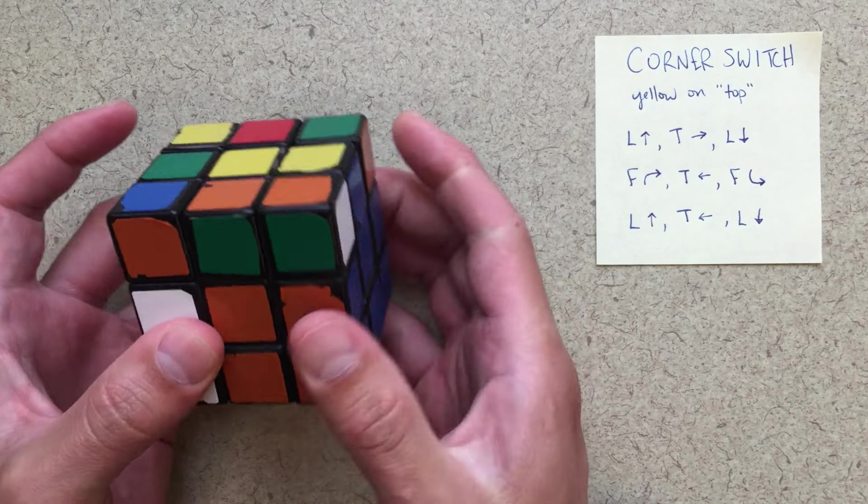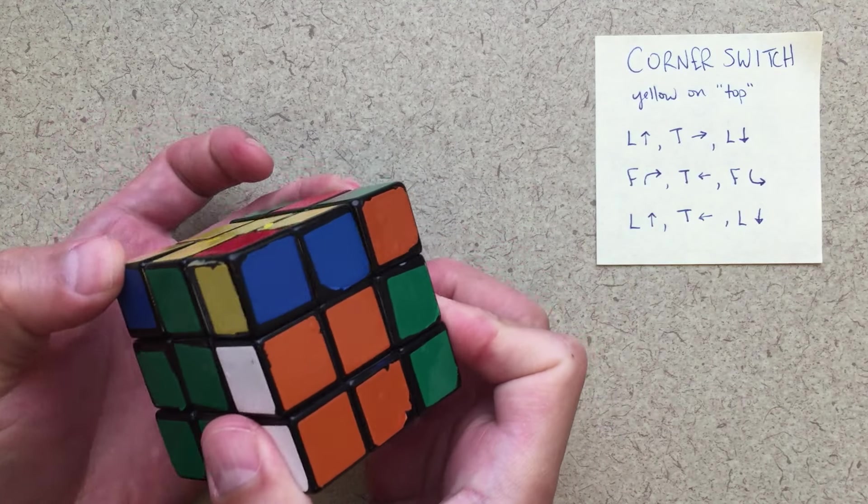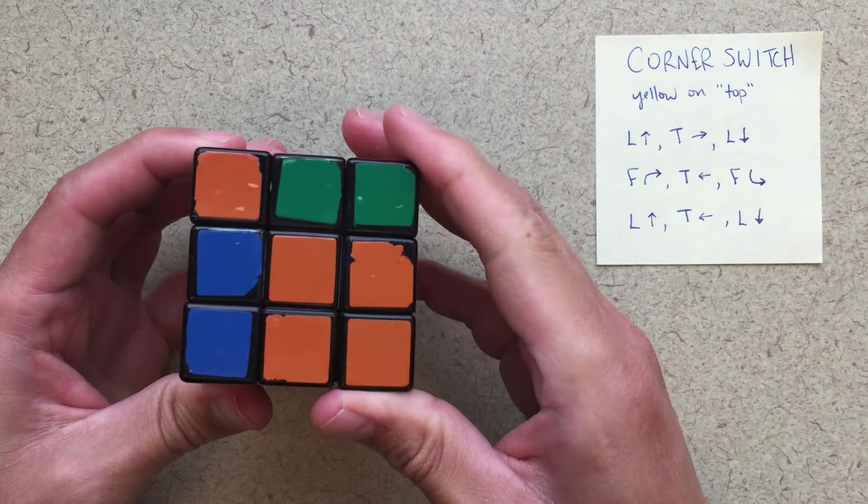Left up. Top to the right. Left down. So that's the first step. Front face clockwise. Top to the left. Front face back. Counterclockwise.